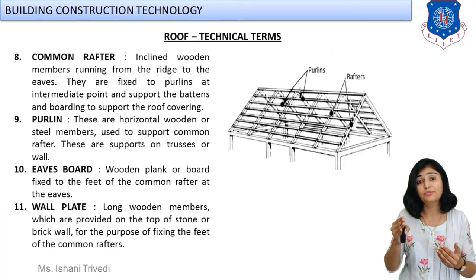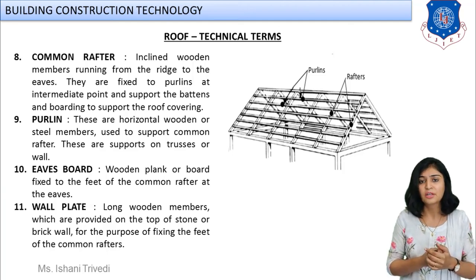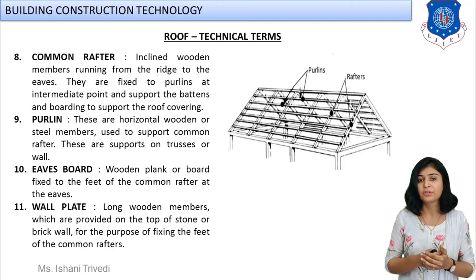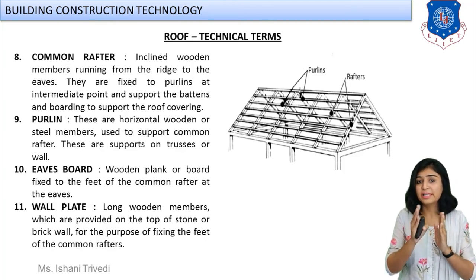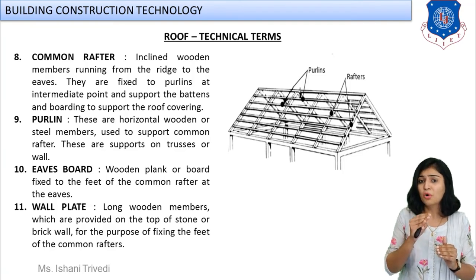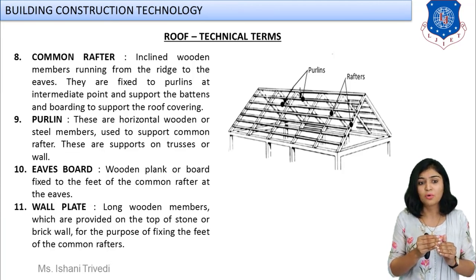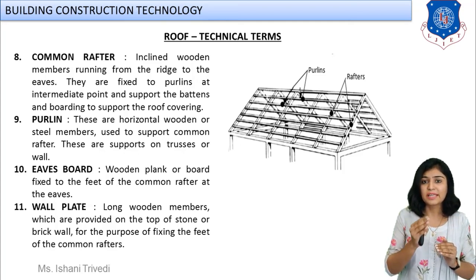Next is eaves board. You know what eaves is — the lower edge of the inclined member. Just like ridge and ridge piece, eaves and eaves board follow the same logic. The actual member — the wooden or steel board — provided at the eaves is known as eaves board. Technically: the wooden plank or board fixed to the feet of the common rafter, that is the lower edge of the common rafter, is known as eaves board.